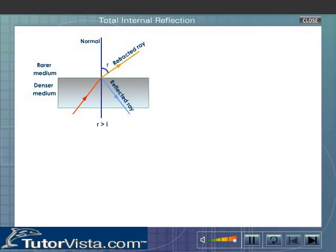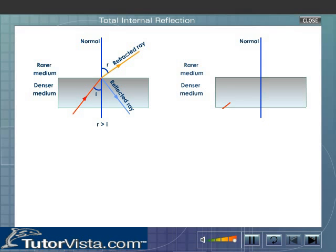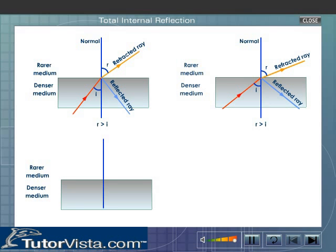That is, the angle of refraction R is greater than the angle of incidence I. Now, if we increase the angle of incidence, the angle of refraction also increases. For a certain angle of incidence, say I_c, the refracted ray grazes over the surface of separation and the angle of refraction will be 90 degrees. I_c is referred to as the critical angle.